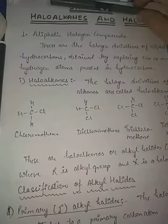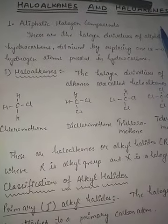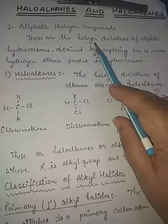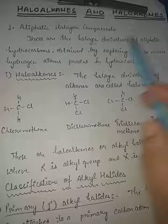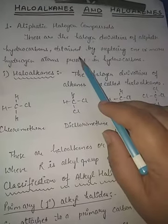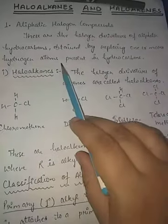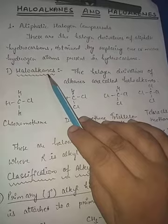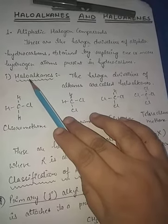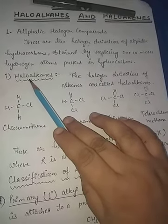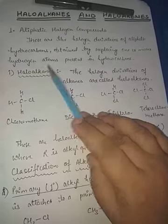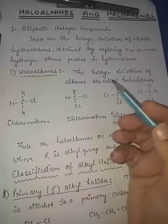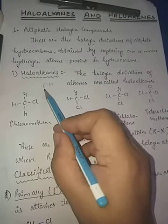Aliphatic halogen compounds are the halogen derivatives of aliphatic hydrocarbons - meaning a halogen atom is present in a straight open chain structure, obtained by replacing one or more hydrogen atoms in a hydrocarbon. In haloalkanes, alkanes are there and one hydrogen is removed and in its place one halogen atom is added. These halogen derivatives of alkanes are called haloalkanes.